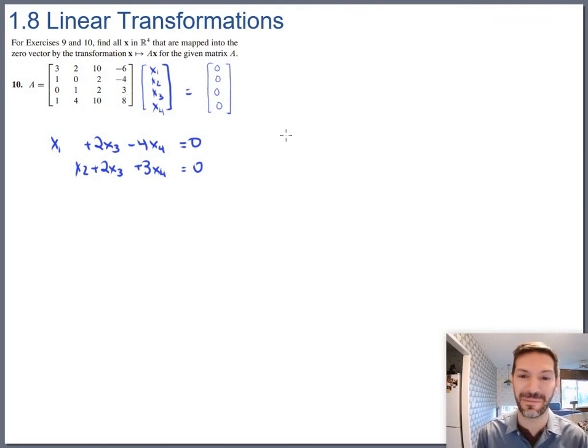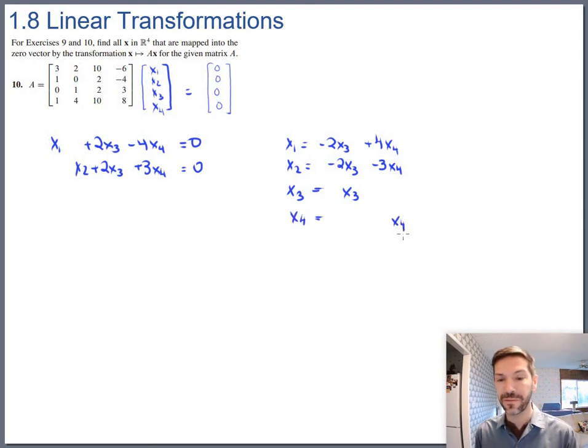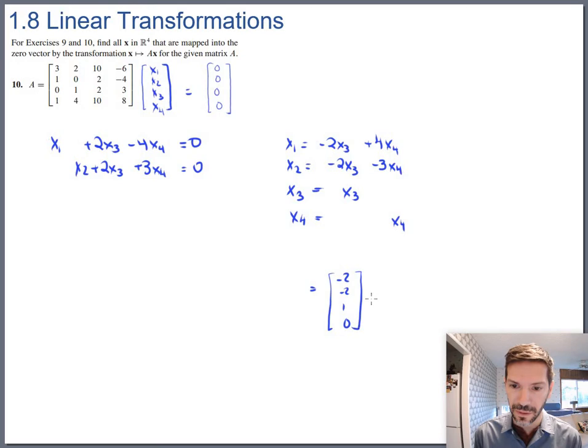Those are the only two actual equations that we get from our reduced matrix. As far as actually writing out solutions, solve for all four variables. So x1 is minus 2 x3 plus 4 x4 and x2 is minus 2 x3 minus 3 x4 and x3 is x3 and x4 is x4. And let's write this solution set in vector form.